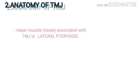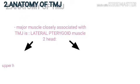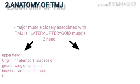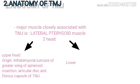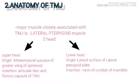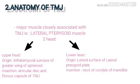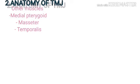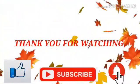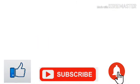The major muscle closely associated with the TMJ is the lateral pterygoid, which has two heads. The upper head originates from the infratemporal surface of the greater wing of the sphenoid and inserts into the articular disc and fibrous capsule of the TMJ. The lower head originates from the lateral surface of the lateral pterygoid plate and inserts into the neck of the condyle. Other muscles — medial pterygoid, masseter, and temporalis — will be discussed in detail in the muscles of mastication topic. Thank you for watching; please like, subscribe, and tap the bell icon for part 2.